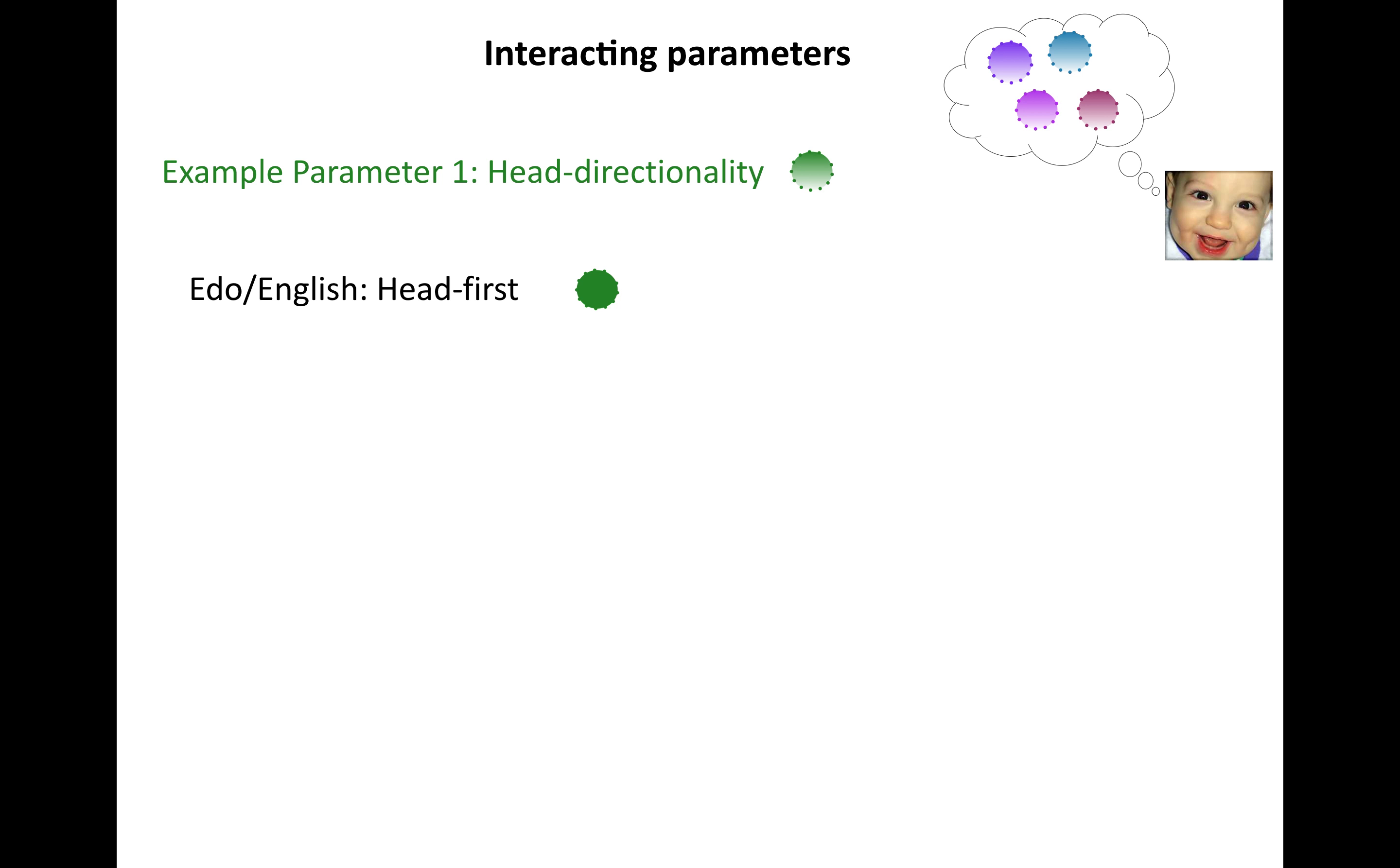So let's look at an example of interacting parameters, and we'll start with this one, this parameter here, head directionality, which we've talked about before. In languages like English and Edo, you would have a head first value, and this gives you basic word orders where, for example, in the verb phrase, the verb comes before other things, like the object.